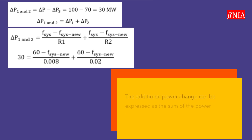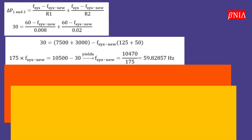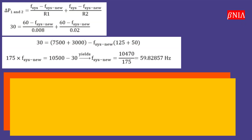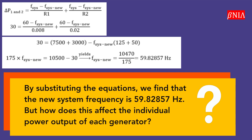The additional power change can be expressed as the sum of the power changes for the first and second generators. Keep in mind that when the load increases, all generators operate at the same reduced frequency. By substituting the equations, we find that the new system frequency is 59.82857 Hz.